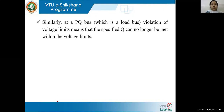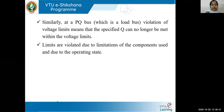At a PQ bus, violation of voltage limits means the specified Q can no longer be met within the voltage limit. The voltages and angles found at PQ buses should remain within specified limits. Limits are violated due to the limitations of the components used and due to the operating state.